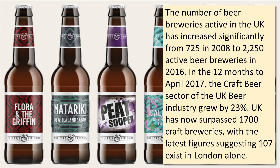The number of beer producers in the UK has shot up from 725 in 2008 to over 2,000 active producers in 2016. The craft beer sector has been growing in excess of 20% per year, with mass-scale producers like Heineken and AB InBev shifting attention to craft beer — particularly in cans. The UK now has over 1,700 craft breweries, many relatively small, including more than 107 craft beer makers in London alone.